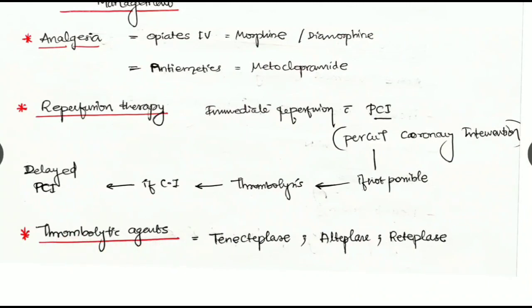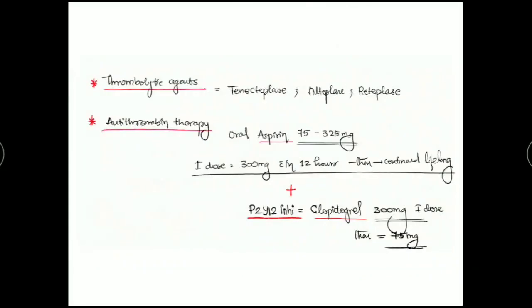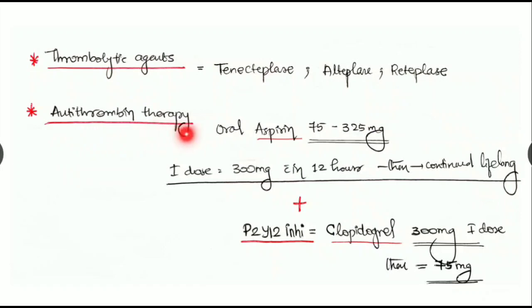Which are the thrombolytic agents? The mainly used agents are tenecteplase, alteplase, and reteplase. Antithrombin therapy is a must. Oral aspirin 75 to 325 mg is the dosage, but the first dose is always 300 mg stat within the 12 hours of presentation, then continued as lifelong if it is not contraindicated. Along with P2Y12 inhibitors, mostly used clopidogrel 300 mg first dose stat, then continuing with 75 mg.